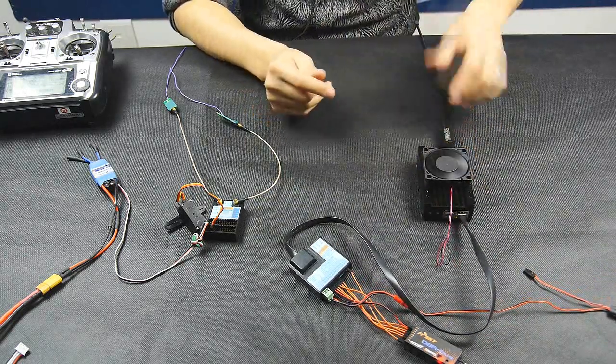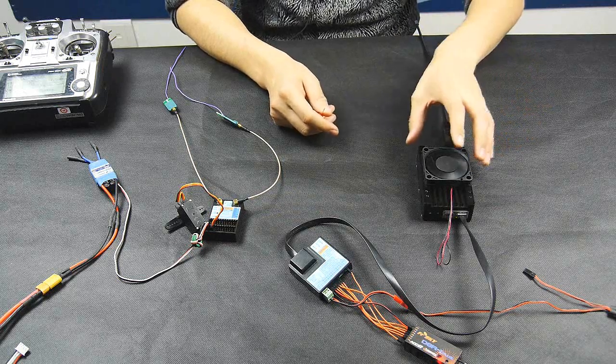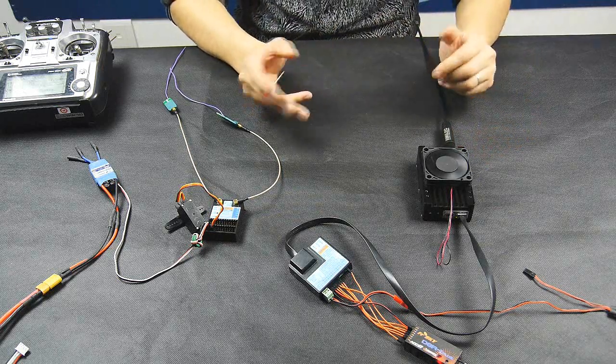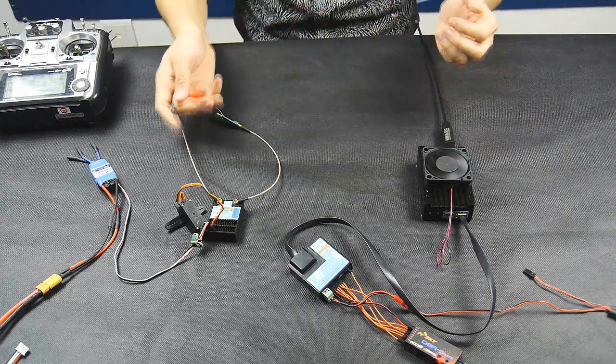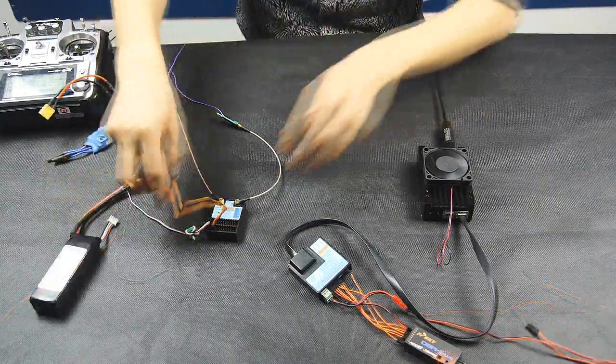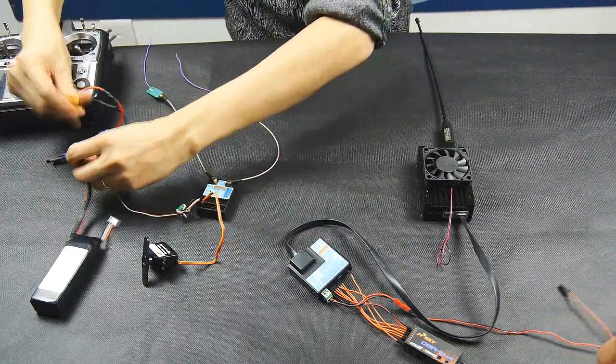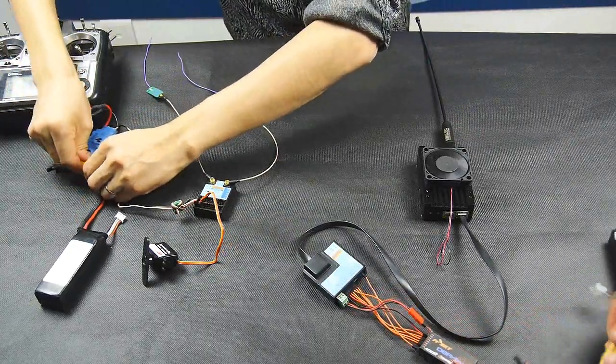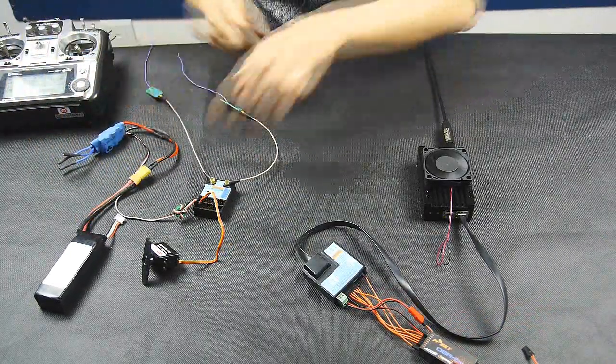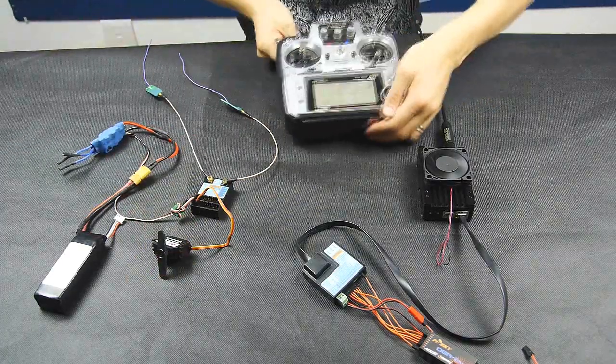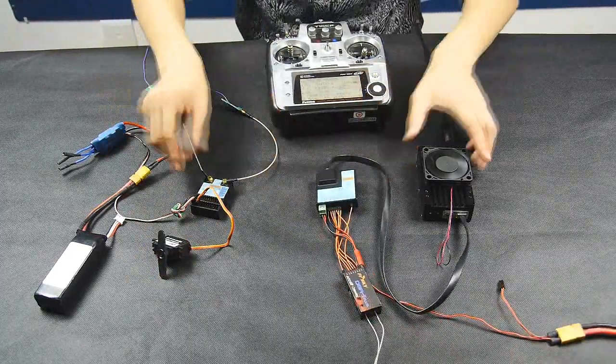After several seconds you can hear a beep sound from the transmitter module, meaning the binding procedure is complete. So now just power off the transmitter and the receiver module. Then power them on again. Now I can use my radio to control this servo.